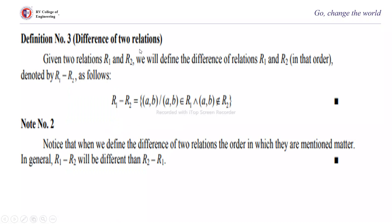The difference of two relations: R1 minus R2 is the set of ordered pairs (a,b) such that (a,b) belongs to R1 and (a,b) does not belong to R2. Note that R1 minus R2 is not equivalent to R2 minus R1 — they will be different.